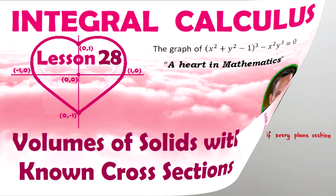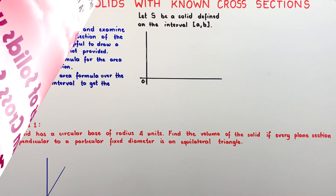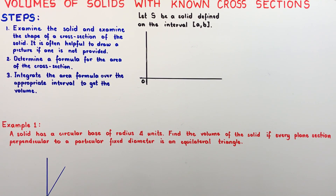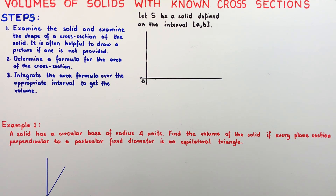In this video, I will be discussing volumes of solids with known cross-sections. Frequently in mathematics, we encounter solids whose boundaries are not surfaces of revolution. The methods discussed in previous videos cannot solve the volumes of solids of this type. However, in most cases, the volume of such solids may be found if the areas of its parallel cross-sections are known to us.